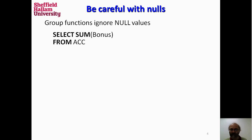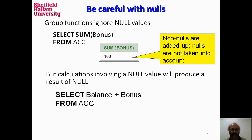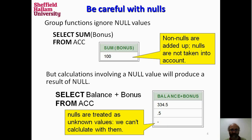In a previous video I already mentioned that you have to watch out with nulls. Group functions, as you've just seen, ignore null values when using all of the other ones. But other functions don't ignore null values. Because bonus is null, the sum of balance plus bonus is itself null — which is a different way of working with null. So sometimes with null you will see a null result, and sometimes the null value will be ignored.